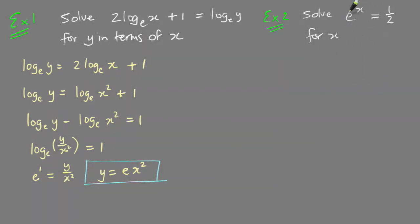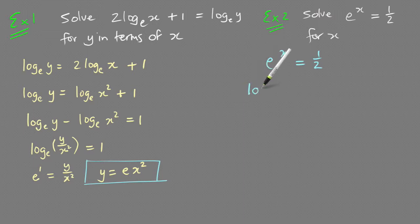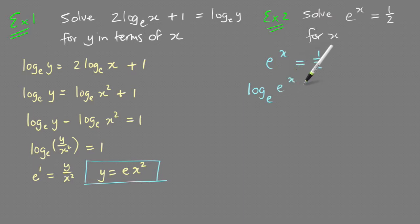Example 2: solve e^x = ½ for x and give an exact value. The only real way to get to that power is to take the log of both sides. Because e is the base here, I'm going to take log_e of both sides: log_e(e^x) = log_e(½).